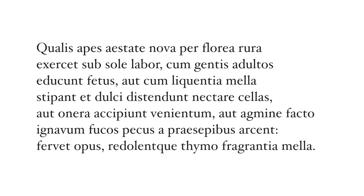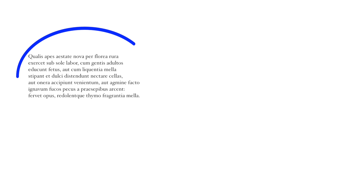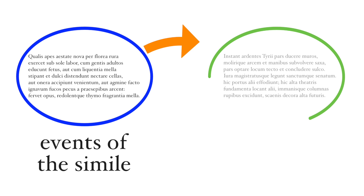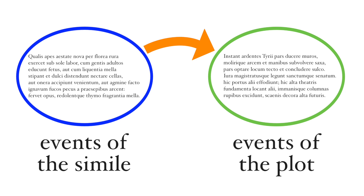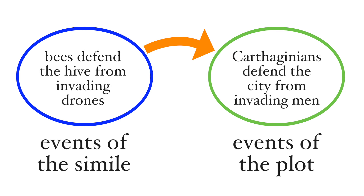Virgil spends seven lines describing typical bee activity, and we're expected to map the events of the simile onto our plot. Virgil doesn't tell us anything about the Carthaginians preparing their defenses against foreign invaders, but he expects us to see that because the bees do. But just because Virgil's similes are long and extended, well, most of them...